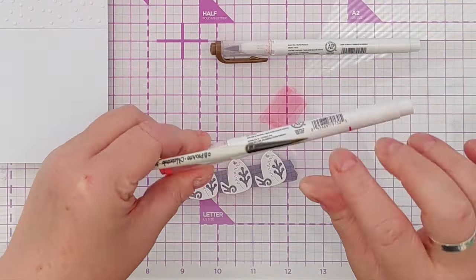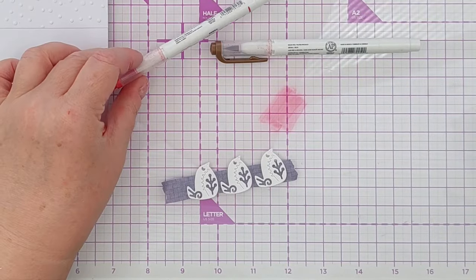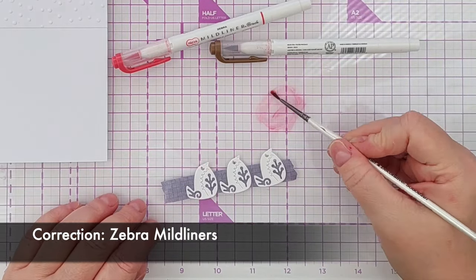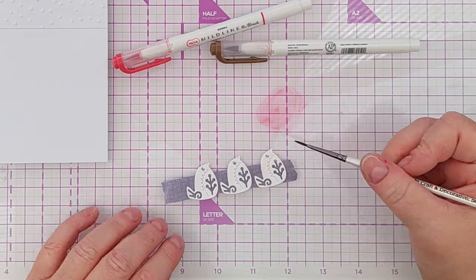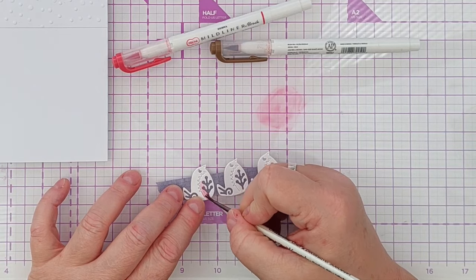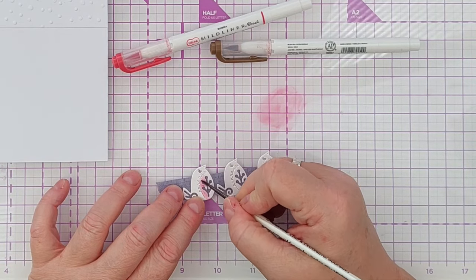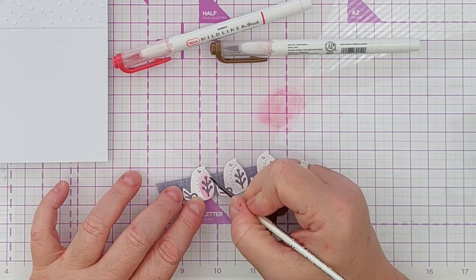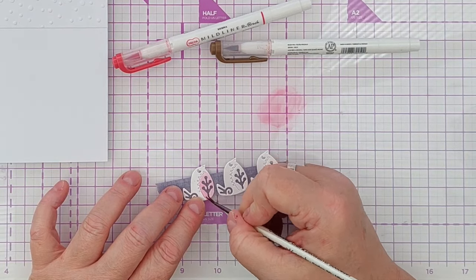To color my robins, I'm going to do some watercoloring but I'm going to use my Zig mild liners to provide the color. I've scribbled a little on my glass mat and I'm picking it up with a small paintbrush and painting it on just on the robin's breast.